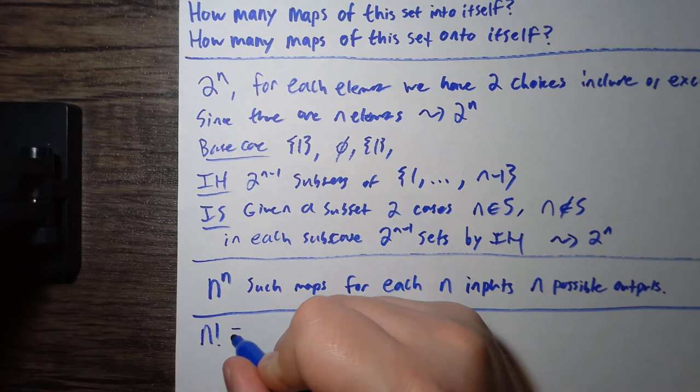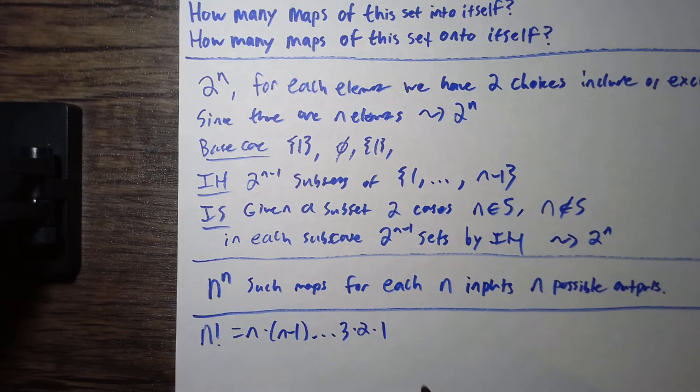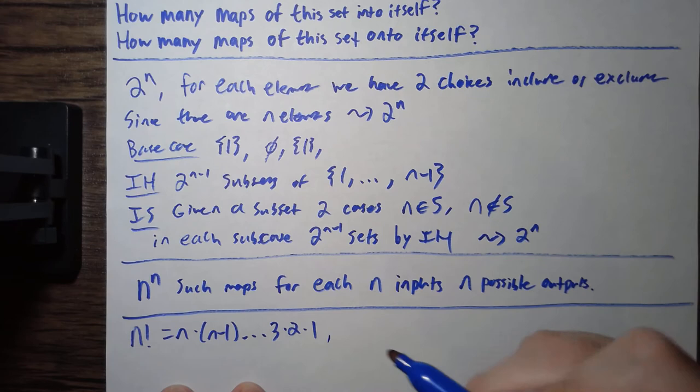And here, it's going to be n factorial, which is n times n minus 1, all the way to 3 times 2 times 1. And the idea of how you get that there's this many